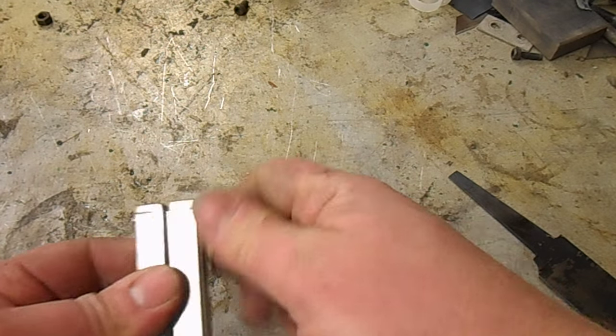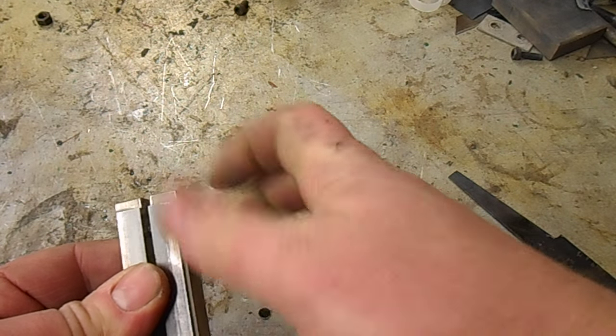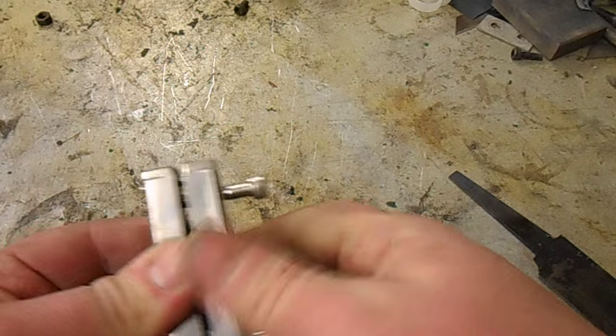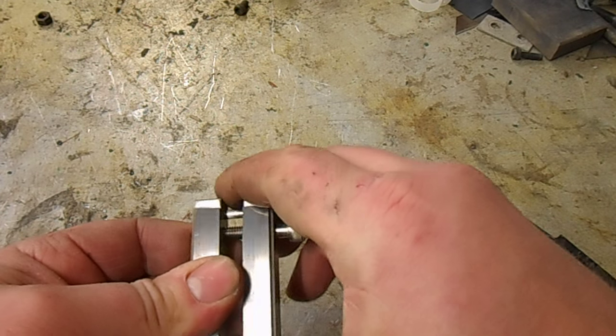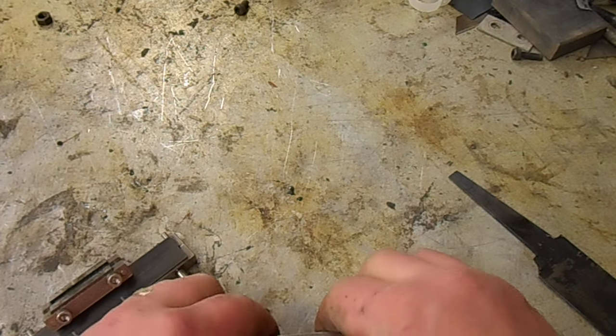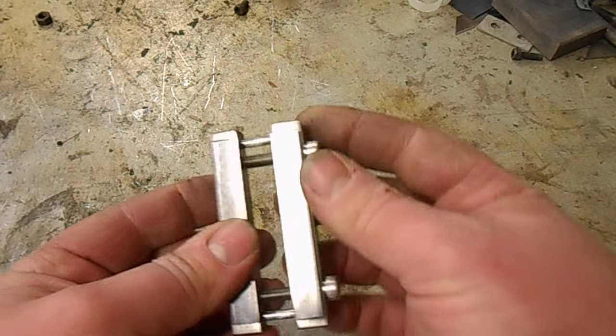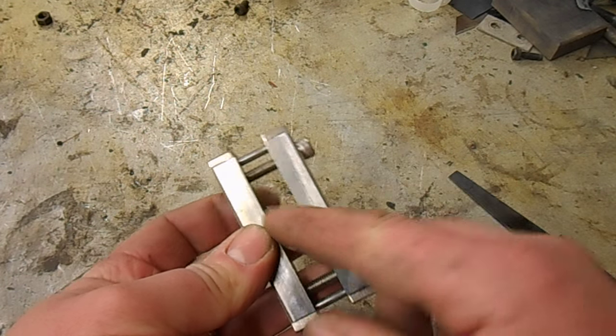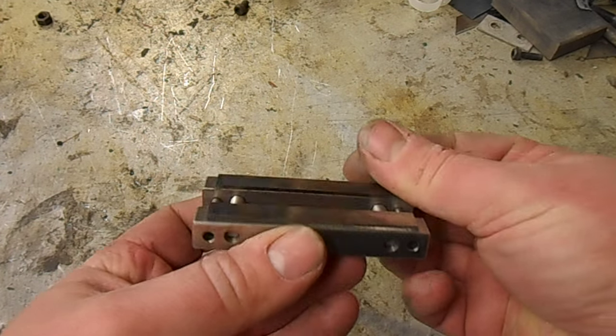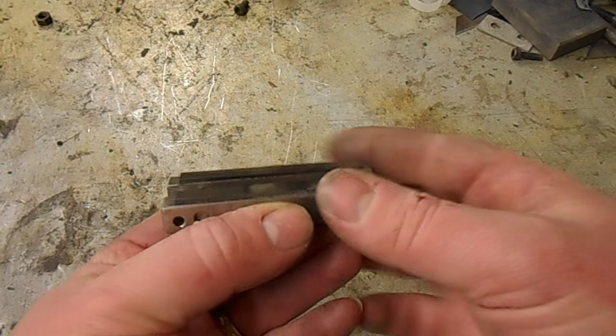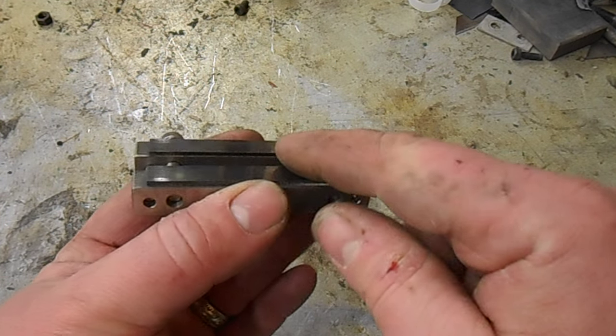The other use for file guides that isn't quite so obvious is when you're doing guard fittings. You can clamp your guard in the file guide. That's one of the reasons that the bolts are left so long on these, you can fit a guard in there. And if you've pre-drilled your slot, you can clamp that file guide on your mark for your slot and file up against it.